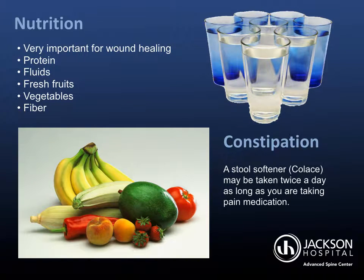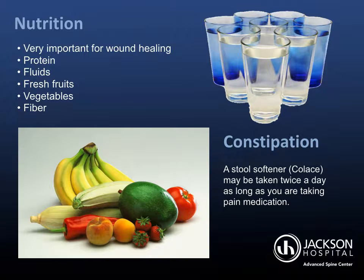What you eat after surgery will not only affect how you feel, but also directly influence wound healing. A diet high in protein is optimal after surgery. Drink plenty of fluids and eat fresh fruits, vegetables, and fiber. To ensure adequate nutrients, you can drink Ensure or Boost — these nutritional shakes are especially important if you're over age 60, had a spinal fusion, or have a decreased appetite after surgery. Taking pain medication may cause constipation, so a stool softener such as Colase may be taken twice a day as long as you're on pain medication.